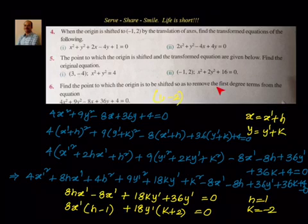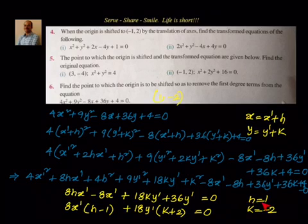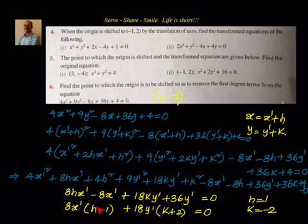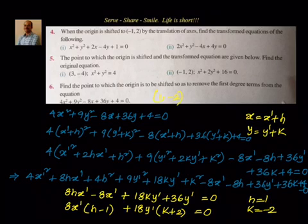After expanding, we combine the first-degree terms. The x-dash term and y-dash term must each equal zero for the first-degree terms to be removed. Setting the coefficient of x-dash to zero gives 8h - 8 = 0, so h = 1. Setting the coefficient of y-dash to zero gives 18k + 36 = 0, so k = -2. Therefore the origin needs to be shifted to (1, -2) so that the first-degree terms will not appear in the transformed equation.